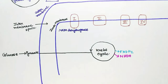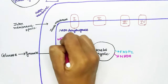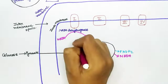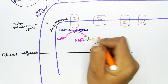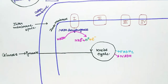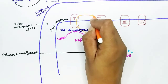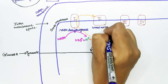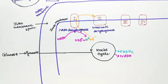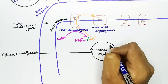As the name suggests, the NADH dehydrogenase complex will dehydrogenate the NADH molecule and break it down into NAD+, H+, and electrons. The released electrons are collected by Complex 1 and sent to the next complex. The name of Complex 2 is succinate dehydrogenase complex.